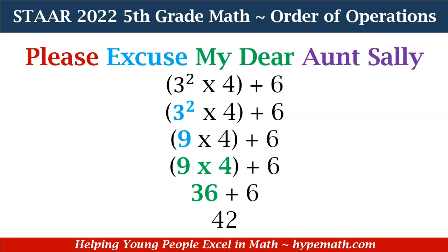Now that I've completed all of the operations within my parentheses, I no longer have them. Now I only have 36 plus 6. That's addition, so 36 plus 6 is equal to 42. So my original expression, (3² × 4) + 6, is equal to 42.